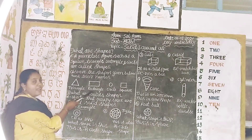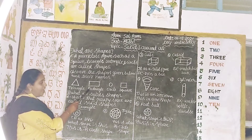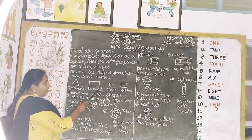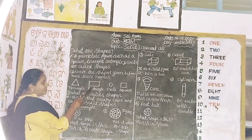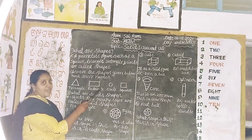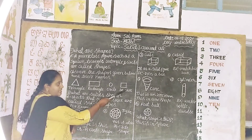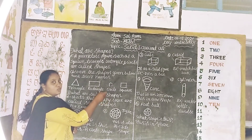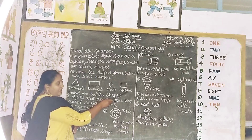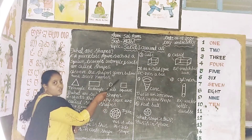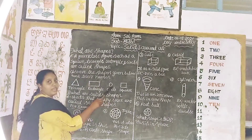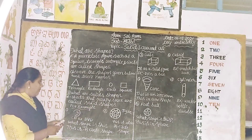What is this? This is a rectangle. R-E-C-T-A-N-G-L-E. Rectangle. It has four sides. What is this? This is a circle. Circle has no sides. What is this? This is a square. S-Q-U-A-R-E. Square. It has four sides: one, two, three, four.